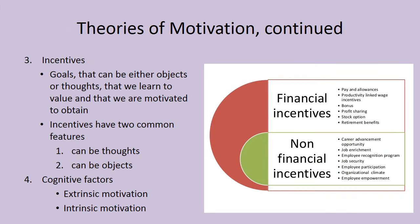We have incentives — goals that can be either objects or thoughts that we learn to value and are motivated to obtain. For example, why do people put themselves through the agony of going to college? Often it's because they want to pursue a career in a specialized area requiring a particular education. Alternatively, research shows that people who have finished college make more money than people who haven't. Whatever the motivations are, they can be enough to help us achieve a specific goal.